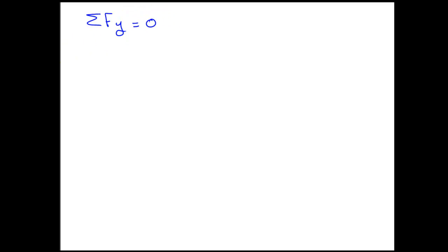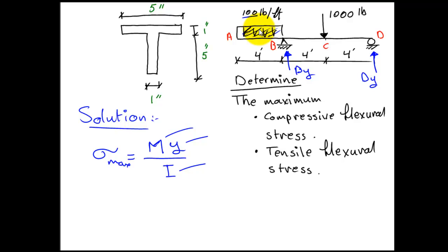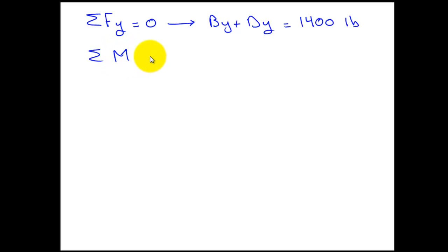For the beam, the summation of forces in the y direction equals zero. I have a reaction By going up on the left and a reaction Dy going up on the right. Summing forces gives By plus Dy equals 1000 plus the resultant of the distributed load, which is 100 multiplied by 4, that's 400. So By plus Dy equals 1400 pounds.